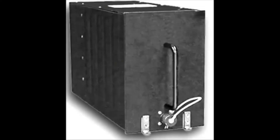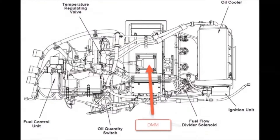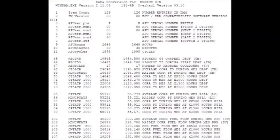During 131-9B APU operation, the ECU registers real-time information and stores some of it in the DMM. The real-time information includes APU LRU and aircraft information. The stored information includes APU hours, cycles, and operational parameters.